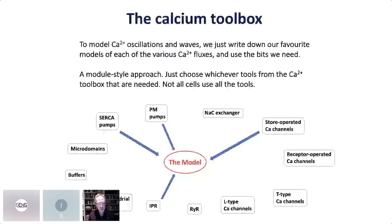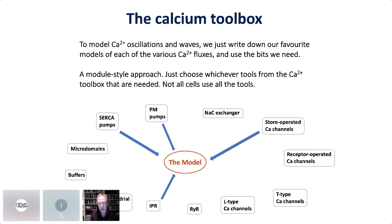We construct models by taking models of the individual components and combining them. For a parotid cell you'd have a model for the store-operated channel, IP3 receptor, SERCA pump, and plasma membrane pump, but not necessarily a sodium-calcium exchanger as those aren't important in salivary gland cells. By selecting which elements of the calcium toolbox to include, you can construct a wide range of models for different cell types and contexts.